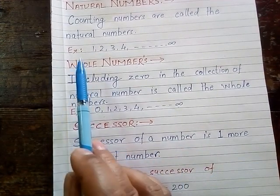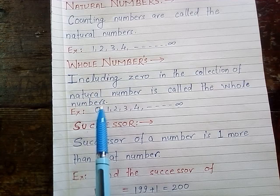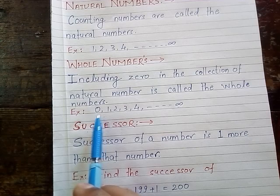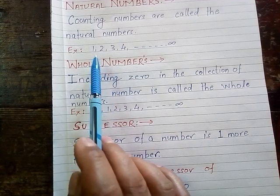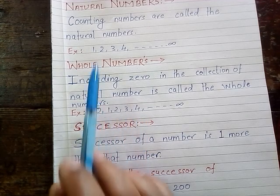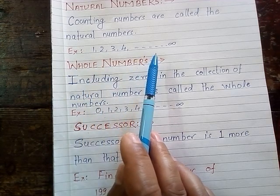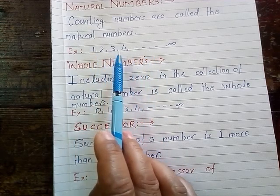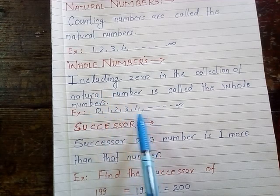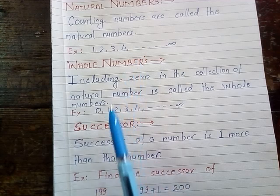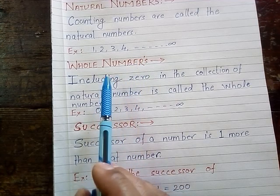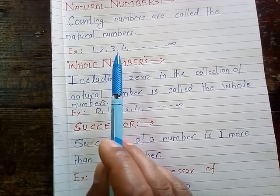Now looking at these two examples, every natural number is a whole number. Please keep in mind: every natural number is a whole number. But every whole number may not be a natural number. For example, 0 is a whole number, but it is not a natural number.